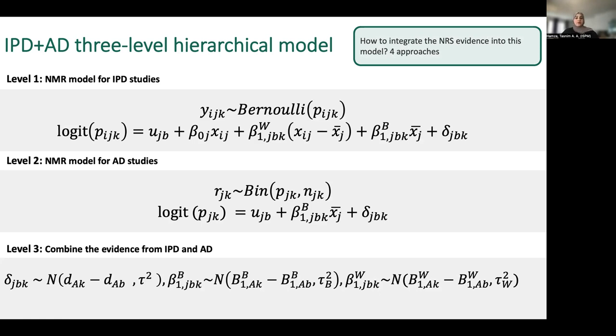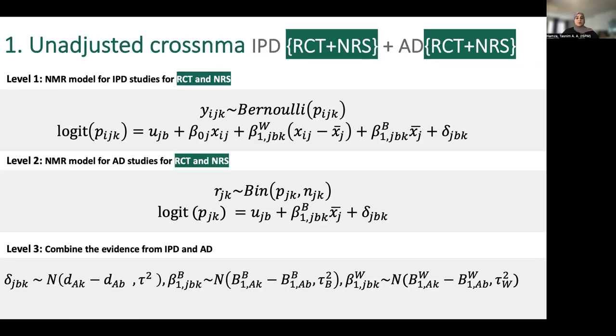How do we integrate the four approaches to combine clinical and observational data into this three-level hierarchical model? The simplest approach is to not differentiate between the two types and fit individual regression model for both clinical and observational studies, and do the same for the aggregate studies. But we know that each type has different level of bias, and this model doesn't account for this bias.